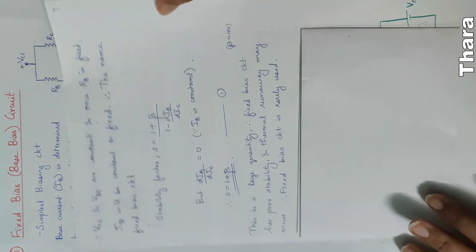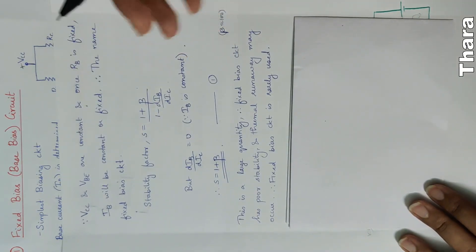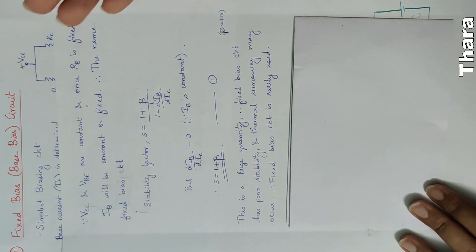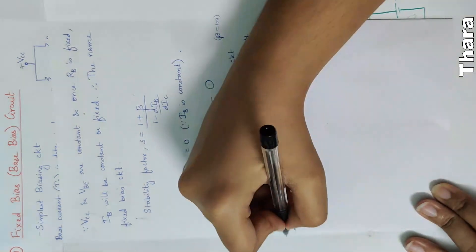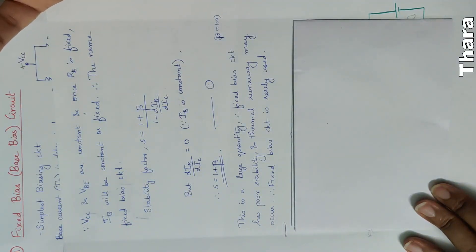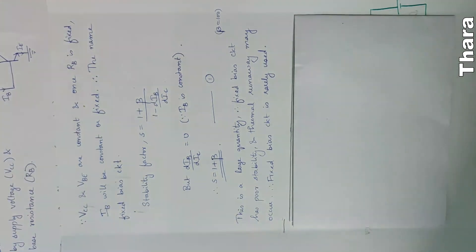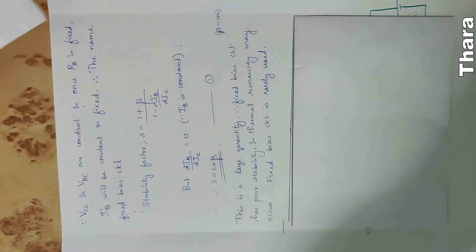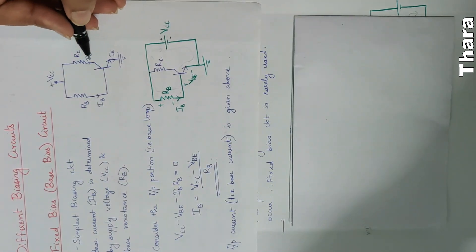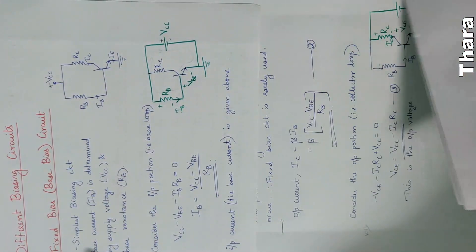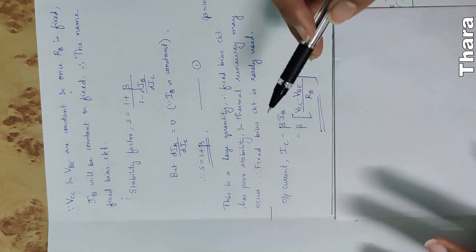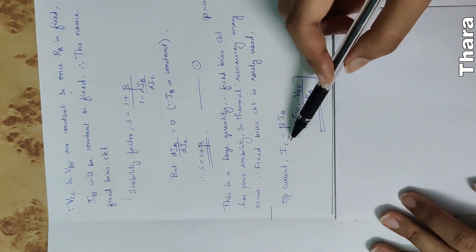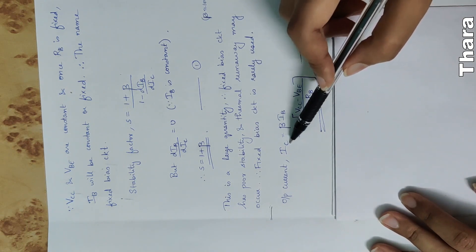If the university exam question asks to derive the output current and output voltage of the fixed bias circuit, we use the fixed bias circuit. The output current is IC. We use common-emitter configuration.